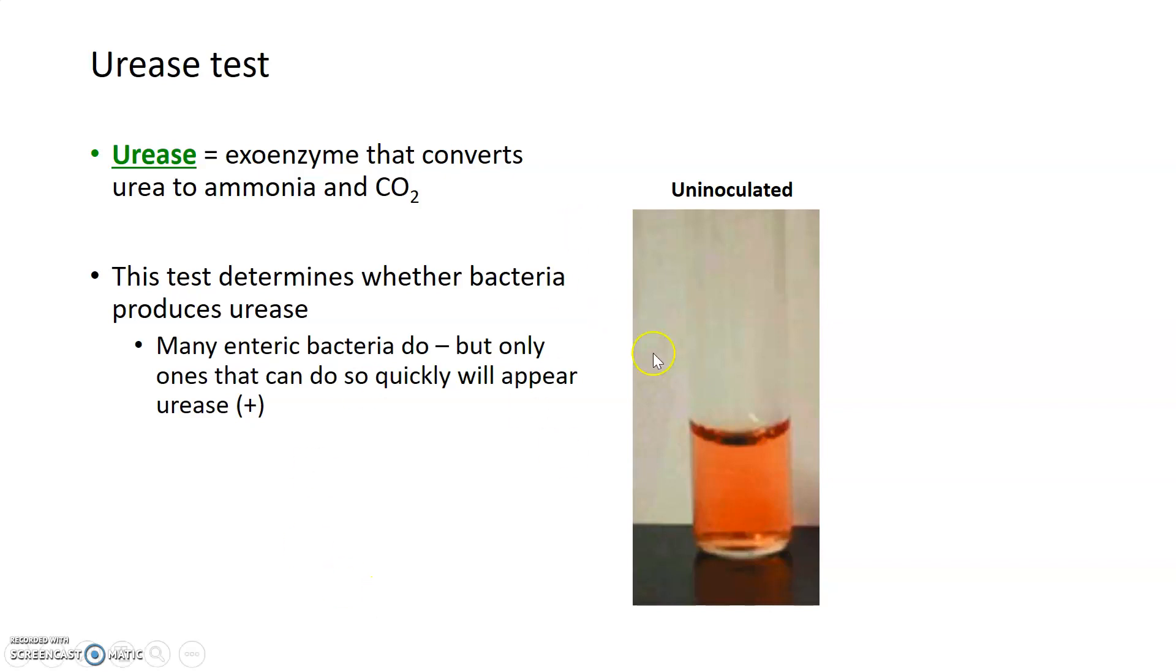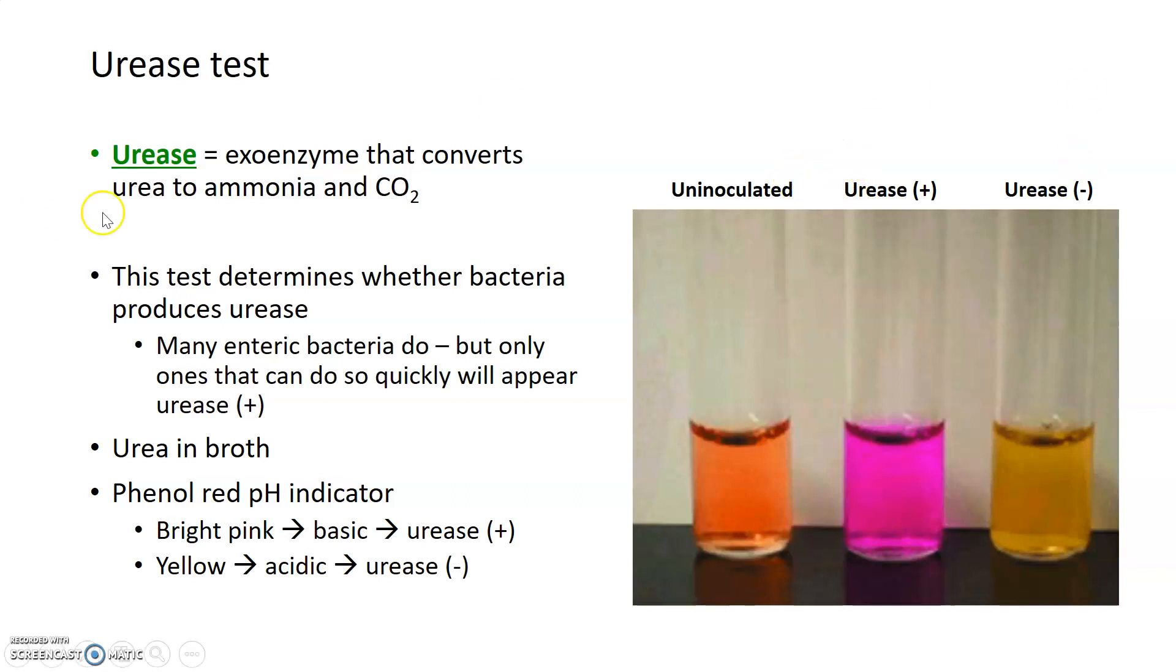An uninoculated urease broth looks like this picture here. There's urea in that broth and there's phenol red pH indicator which is sort of this rusty orange color. In the presence of the urease enzyme, urea is converted into ammonia which is a very basic compound. Then that basic or alkaline compound turns the phenol red indicator bright pink and that would be read as a urease positive result. Bacteria that don't have urease enzyme would not be able to convert the urea into ammonia. This medium would become acidic and the color would turn yellow and that would indicate a urease negative organism. So urease positives are bright pink and urease negatives are yellow.